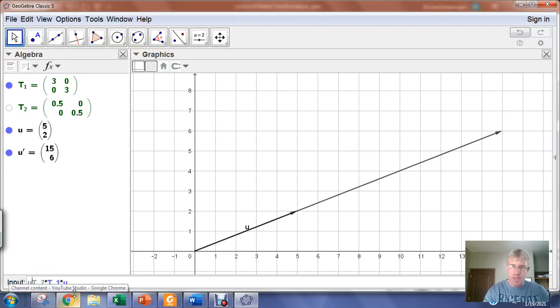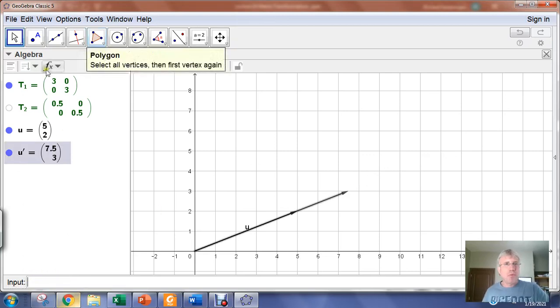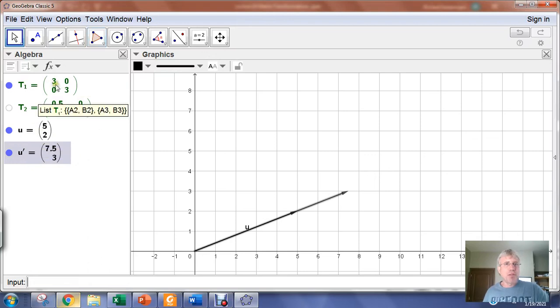I could say T sub 2 times T sub 1 times vector U. Let's call it U prime again. That'll make a new U prime. And we've now transformed the vector U by first making it three times larger than it was and then halving the values. So we wind up with a vector that's three halves the size of the original vector.